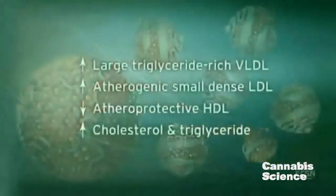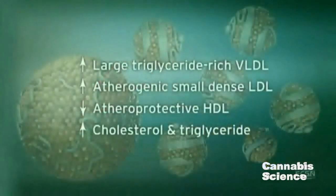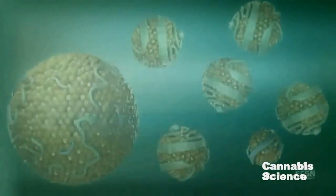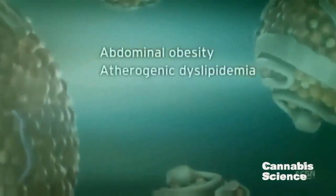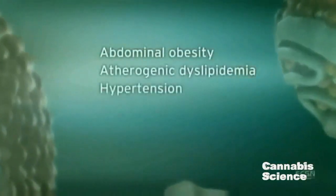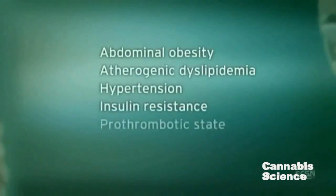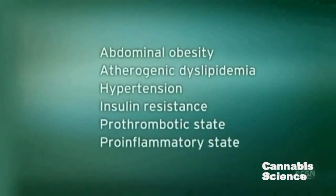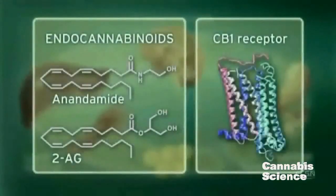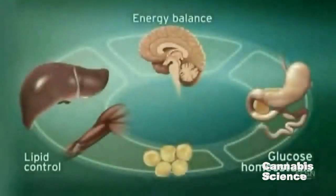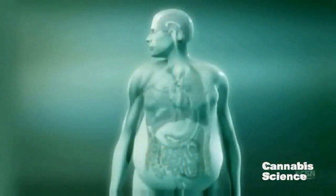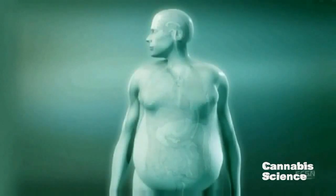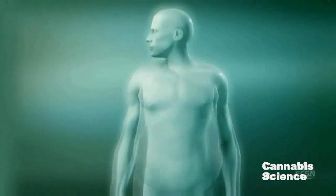Metabolic dysregulation leads to a constellation of symptoms including abdominal obesity, atherogenic dyslipidemia, hypertension, insulin resistance, pro-thrombotic state, and pro-inflammatory state. As basic and clinical research progresses, we will continue to increase our understanding of the central and peripheral endocannabinoid system and its role in the regulation of metabolic function.